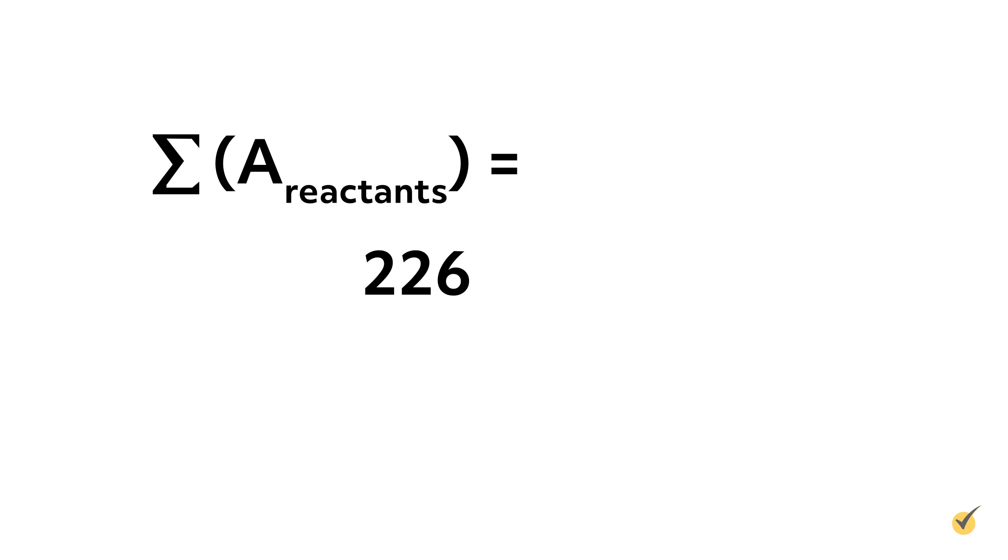Got it? Let's check. To solve for element X, set up the following simple equations. The sum of the mass numbers of the reactants is equal to the sum of the mass numbers of the products. Therefore, A equals 222.